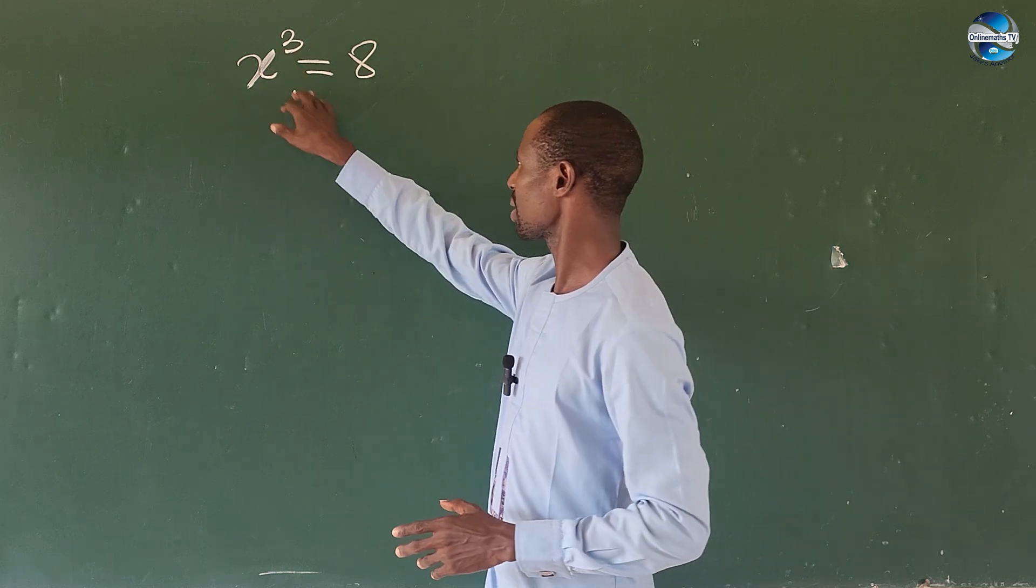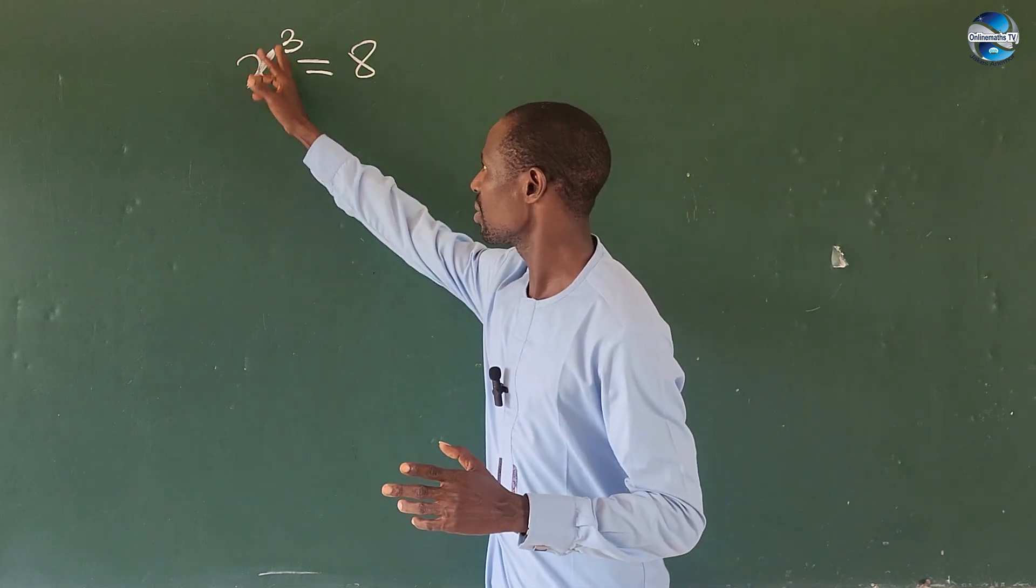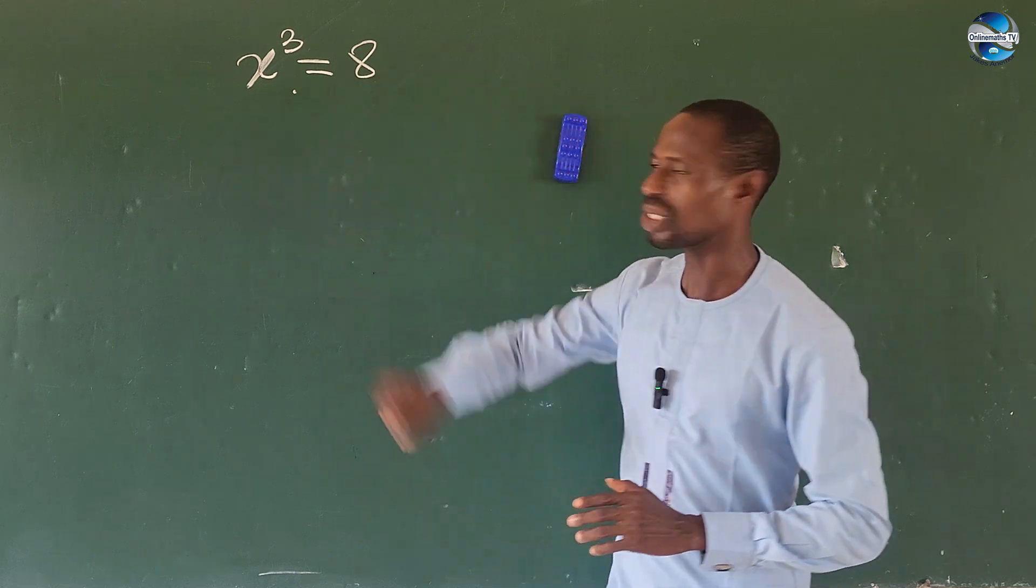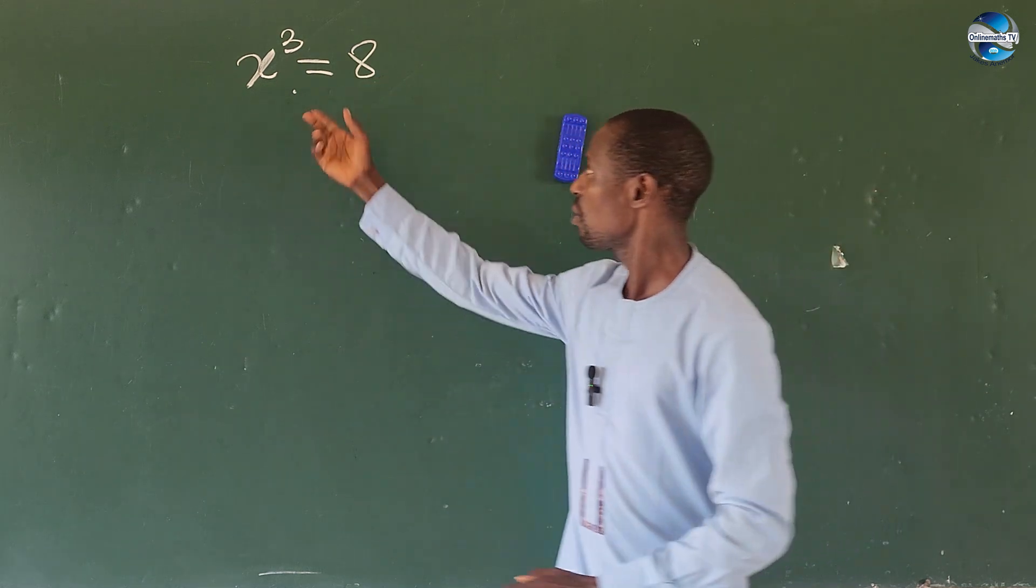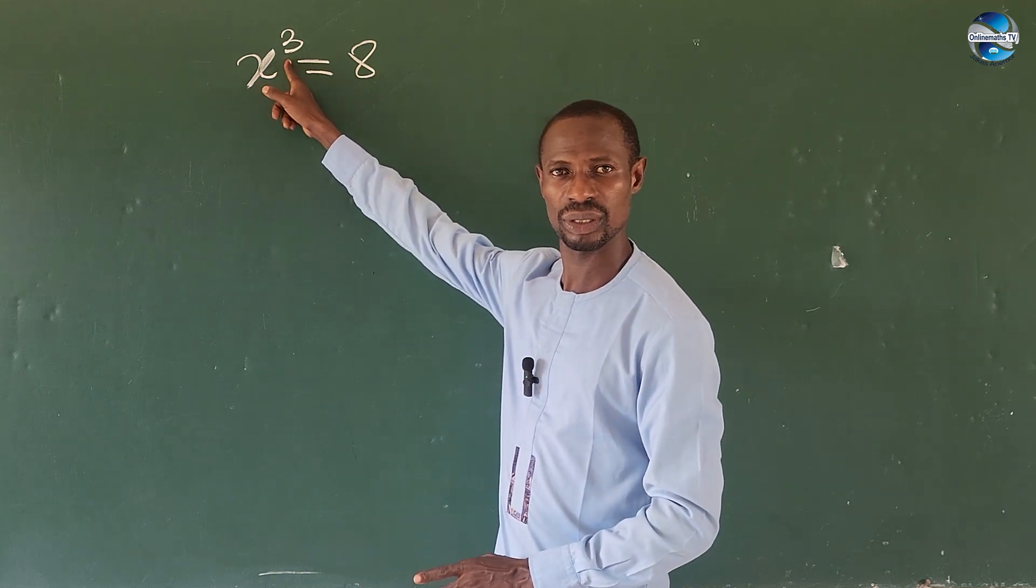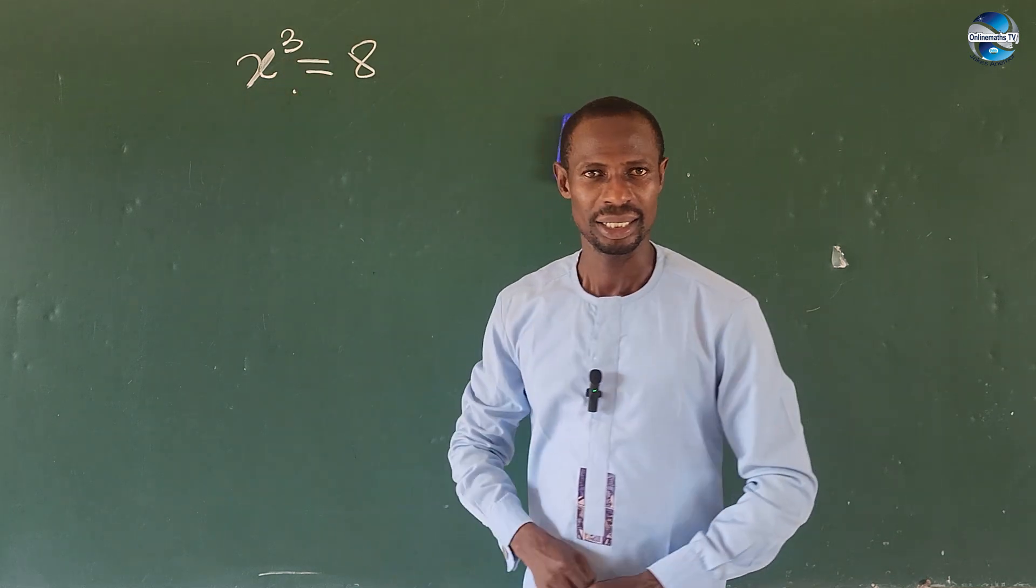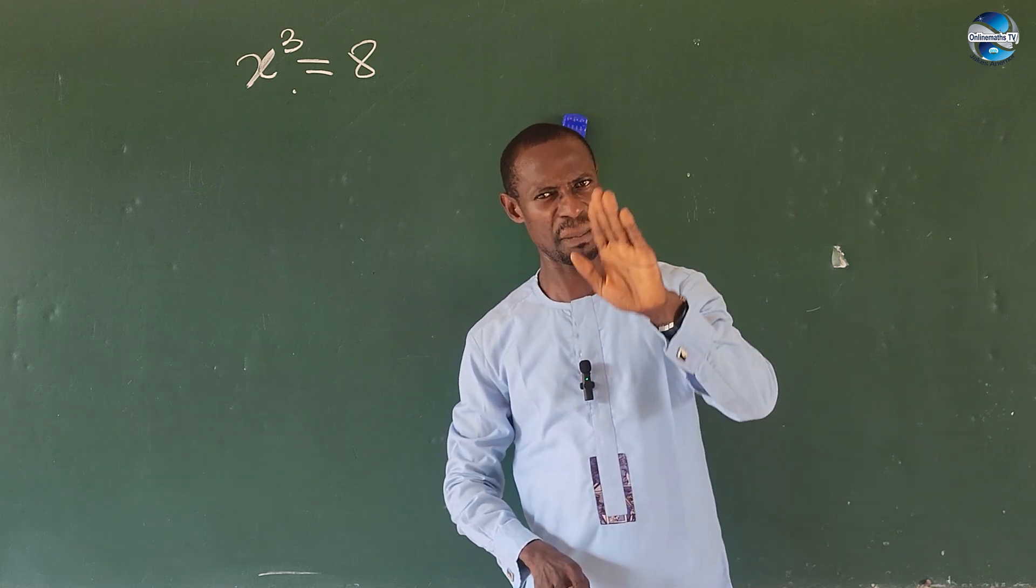We have x to the power of 3 equal to 8. So what number can we place in here, raise it to power 3 and we get us 8? It's just 2. But with this, we have to look for 3 roots that will satisfy this equation. The other ones might be imaginary roots.